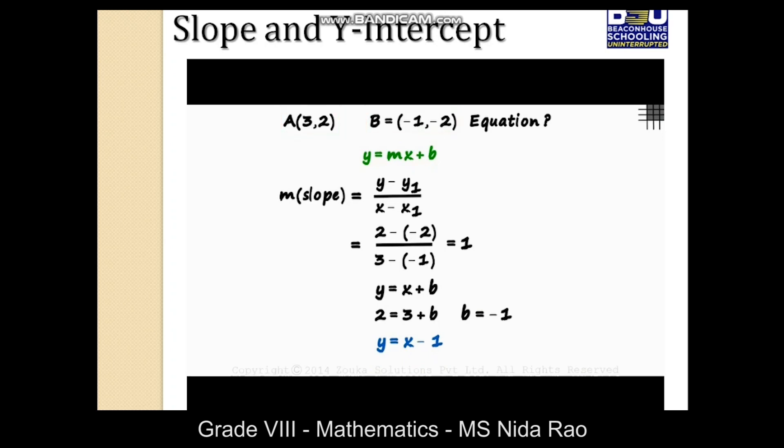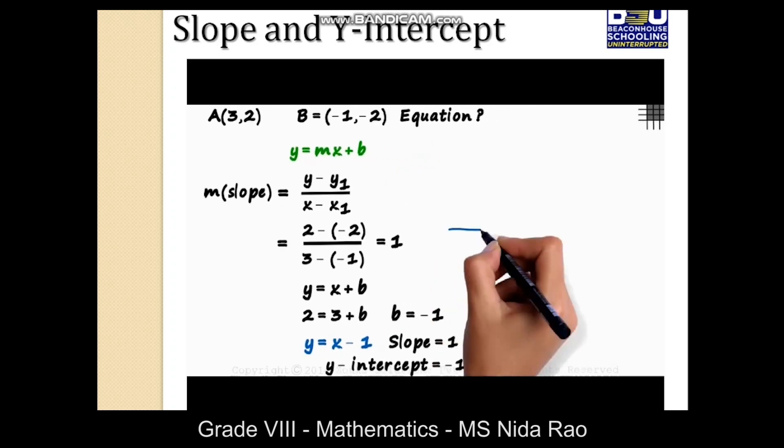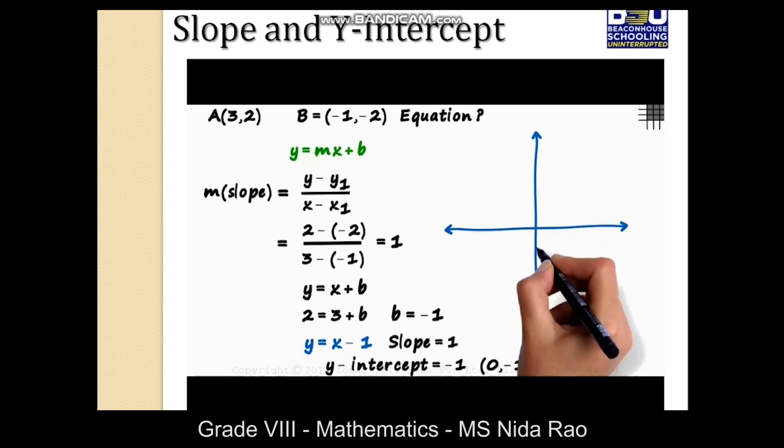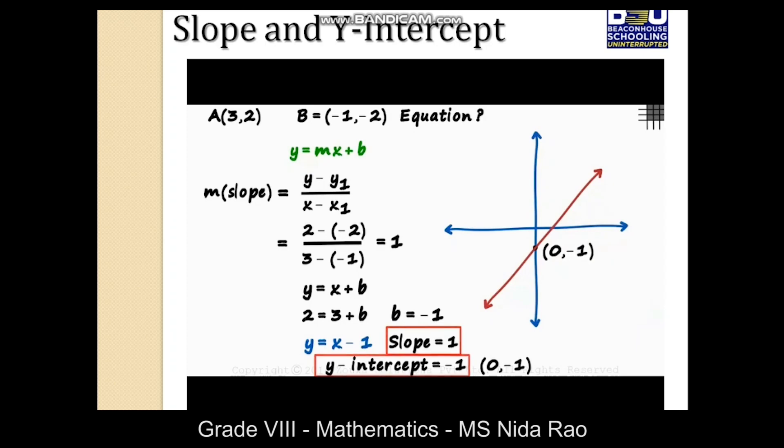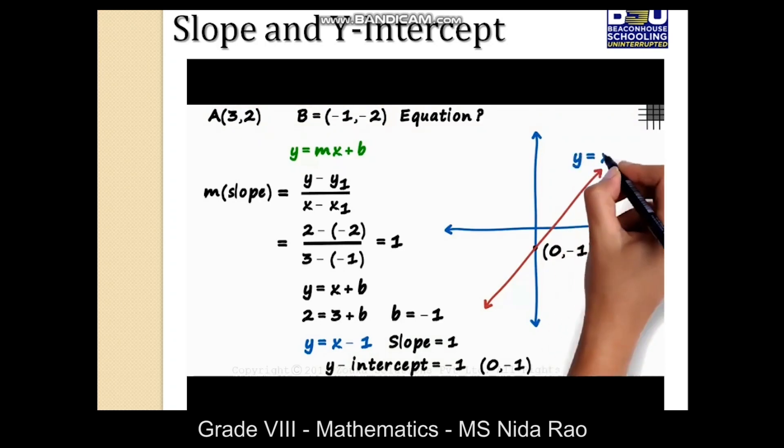Just to understand it a bit better, how will the line look? We have the slope as 1 and y-intercept as minus 1. It means the line passes through 0 comma minus 1. How will the line look on the coordinate plane? The line passes through 0 comma minus 1, and as the slope is positive, the line will look a bit like this. We tried to draw the line using the slope and the y-intercept. An easier way would have been to plot points A and B and then draw a line passing through them. Anyway, so the equation of the line is y equals x minus 1.